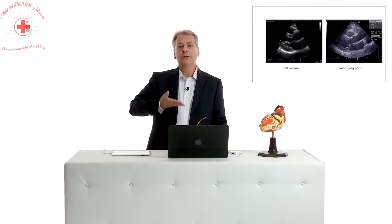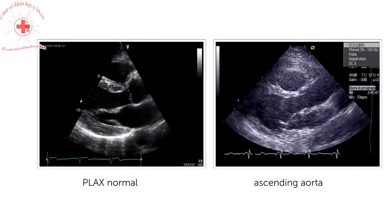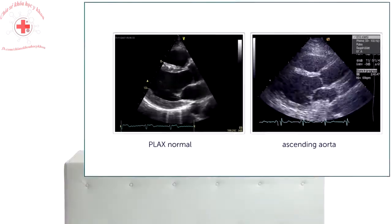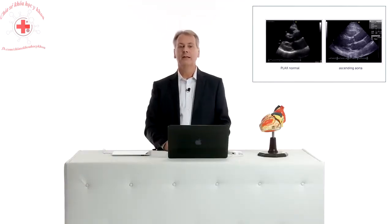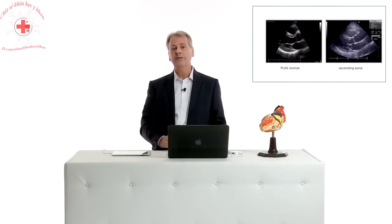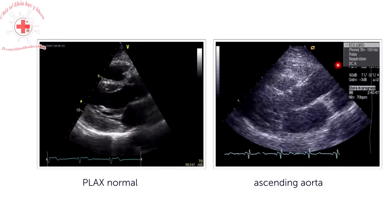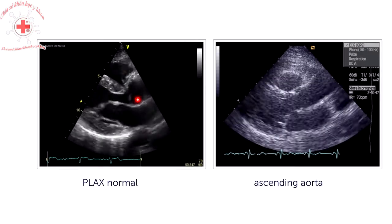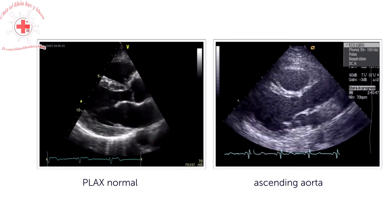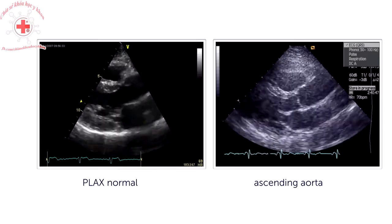When I perform a classic parasternal long axis view I actually perform two views: one where I place the transducer more cranially, and one in the normal position where you get the best image quality. With the more cranial position you will also be able to see more of the ascending aorta. This is very important when it comes to aortic pathologies — detecting aneurysms or dissections — because frequently dissections and dilatation of the aorta occur in regions very far cranially which you will not see in a classic normal parasternal long axis view.